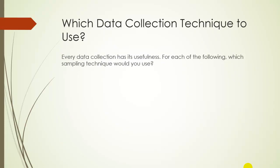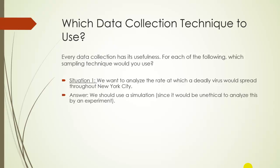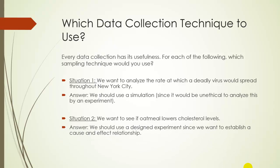So which data collection technique should you use? Every technique has its usefulness, which is why people use all different kinds. For each of the following situations, which sampling technique would you use? Situation one: we want to analyze the rate at which a deadly virus would spread throughout New York City — we should use a simulation, since it would be completely unethical to run an actual experiment. Situation two: we want to see if oatmeal lowers cholesterol levels — a designed experiment would be most appropriate since we want to establish a cause and effect relationship. Situation three: we want to find the approval rating of a Florida congressman — this would be a perfect situation for a poll or survey.